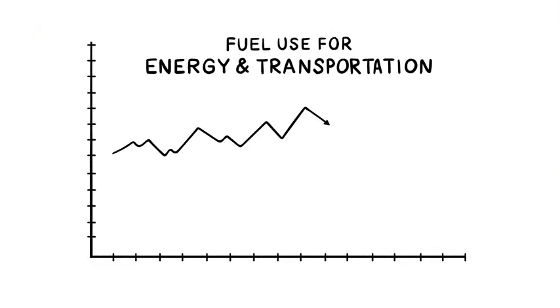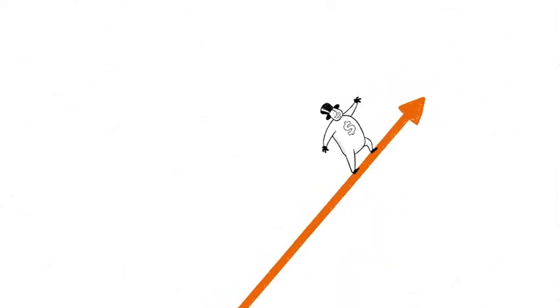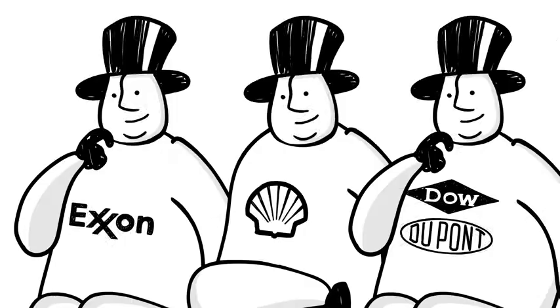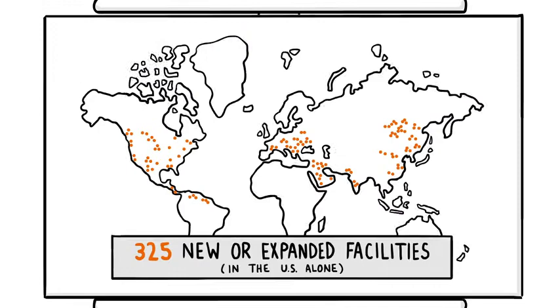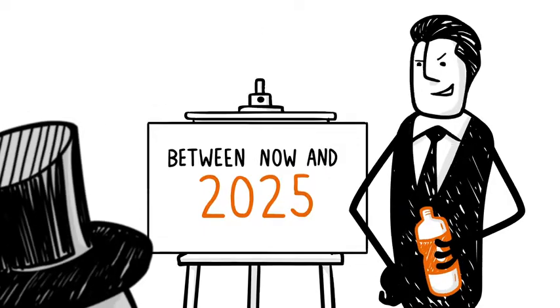As we've gotten better about using less oil and gas to power our lives, the fossil fuel industry found a lifeline in plastics. In fact, oil and gas companies are doubling down on plastic production, with plans to build or expand over 300 petrochemical plants in the US alone by 2025.